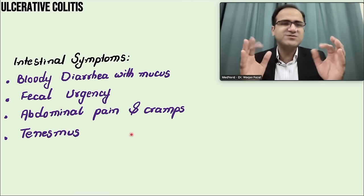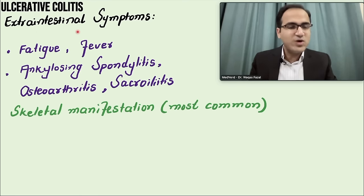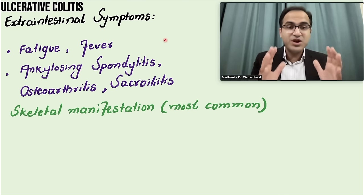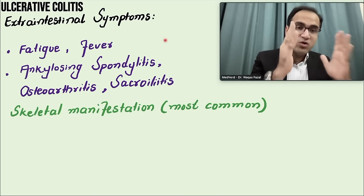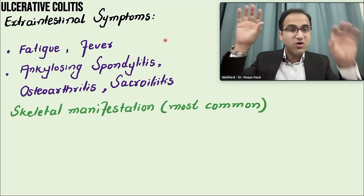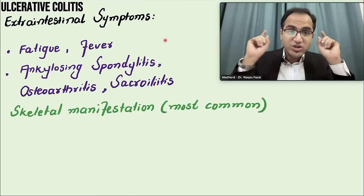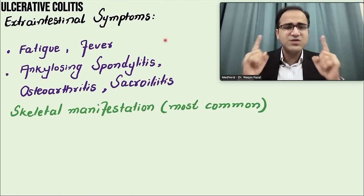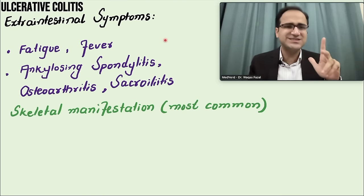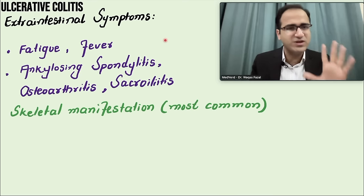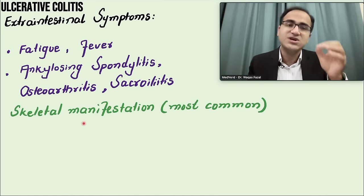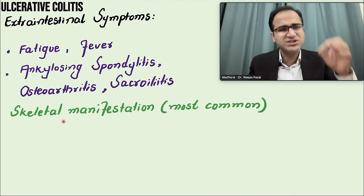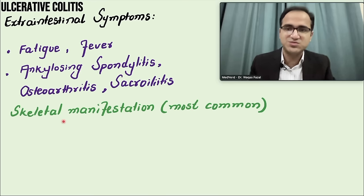Coming to extra-intestinal symptoms, ulcerative colitis involves the colon but also involves other body systems. The most common system involved, if asked in exams, is the skeletal system — ankylosing spondylitis, osteoarthritis, sacroiliitis. Skeletal manifestation is the most common extra-intestinal symptom in these patients.